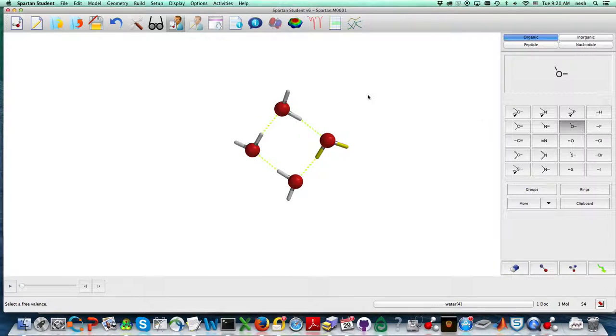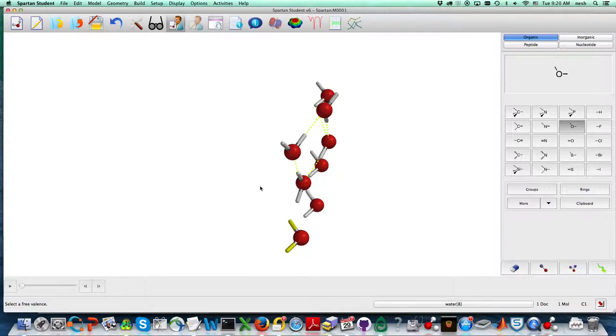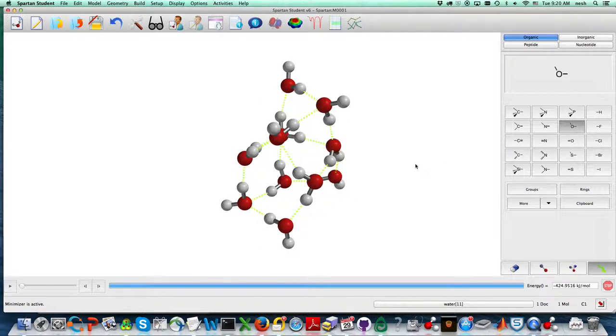Then you just add more and you're making a cluster of some kind. You minimize again, and you can start to see how many hydrogen bonds each water molecule makes.